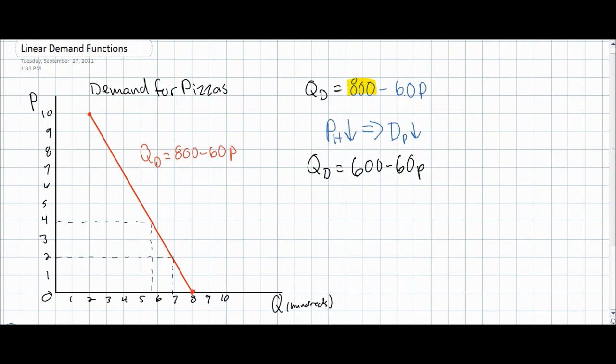Notice that our B variable, the minus 60, has not changed, indicating that consumers will still be just as responsive to a change in price of pizzas as they were before the change in demand. However, our autonomous level of demand, also called our Q-intercept, has decreased now.